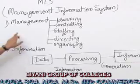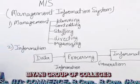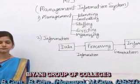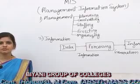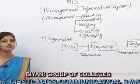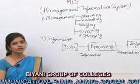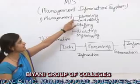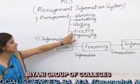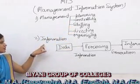First, I define management. Management is an art of getting things done through and with the system in the form of an organized group. The basic functions performed by the manager of an organization are: first is planning, second controlling, third staffing, fourth directing and organizing.